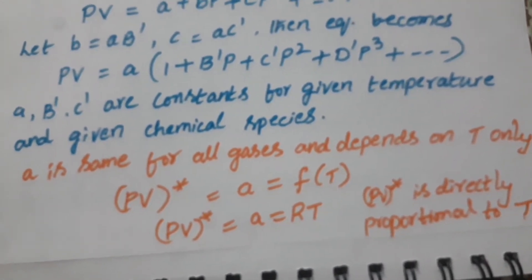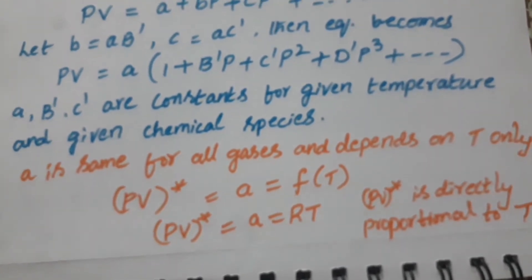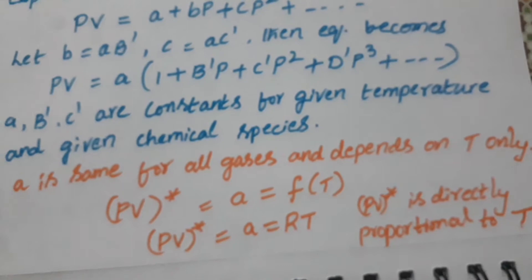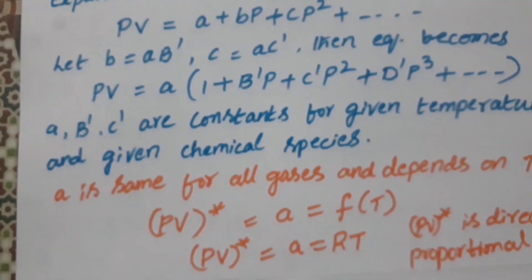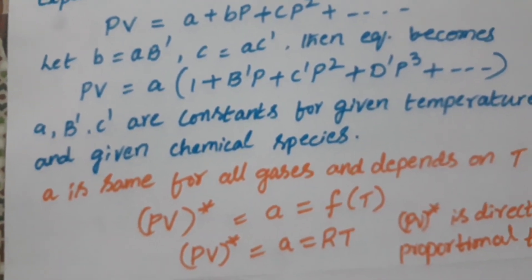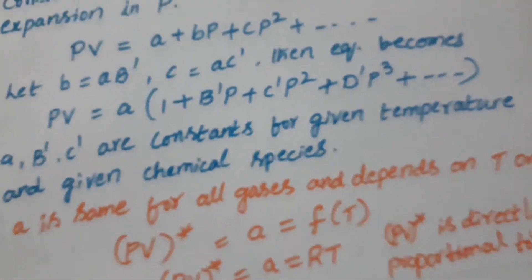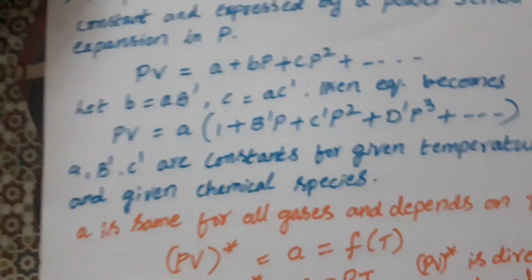So PV* is equal to A which is equal to RT. So the PV* is directly proportional to temperature. So here PV becomes equal to A. So we represent that as PV* is equal to A where we consider the remaining all is constant. That is the pressure is constant.